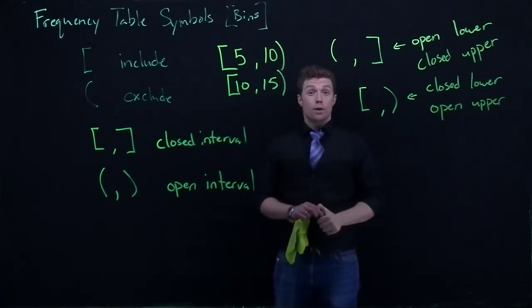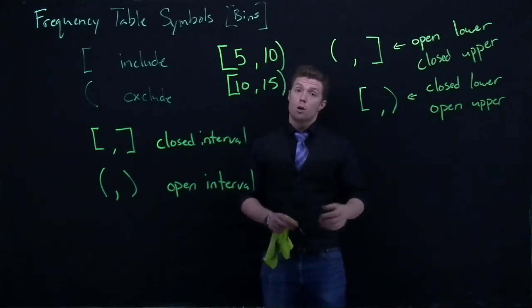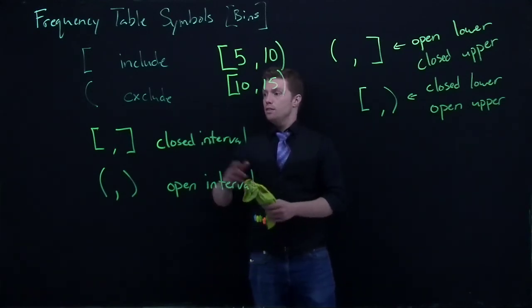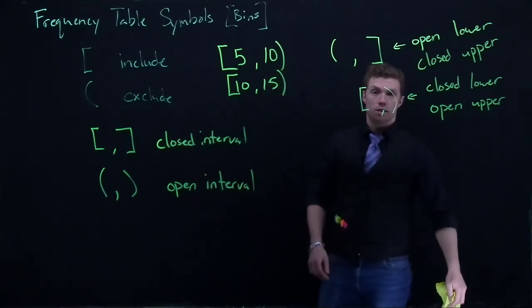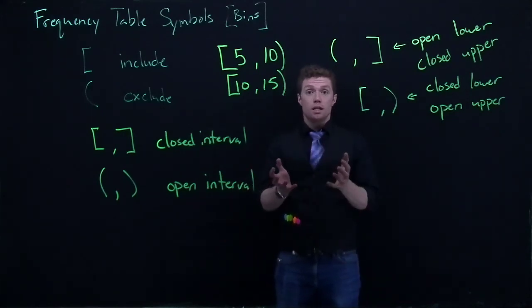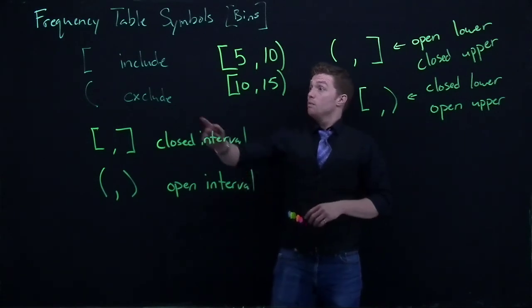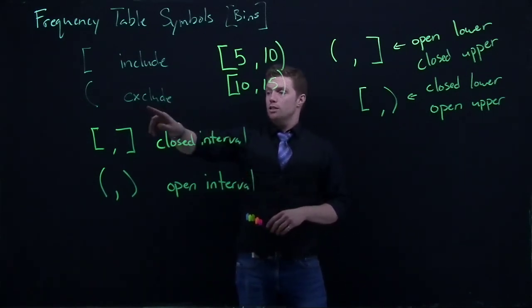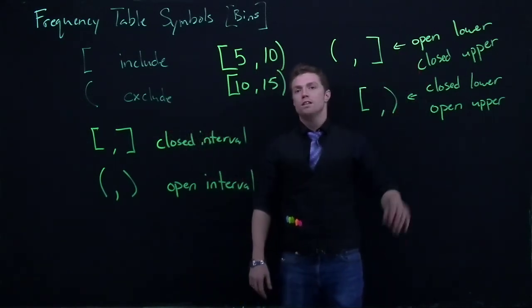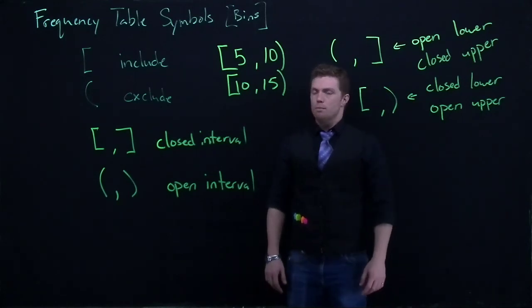So, when we're doing our frequency tables and we're building, we're working on our bin sizes, these different brackets and parentheses will let us know exactly what is being included in the bin, what's being excluded in the bin. And if we can just remember this is include and exclude, you can figure out all of these other possible combinations.